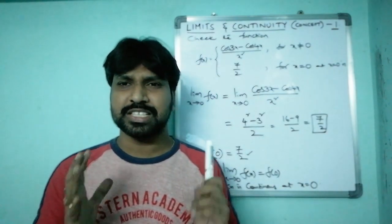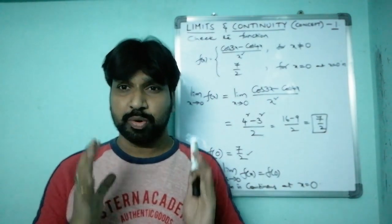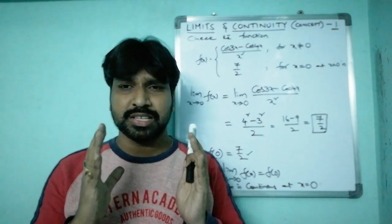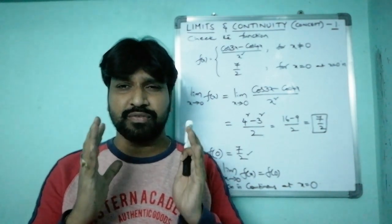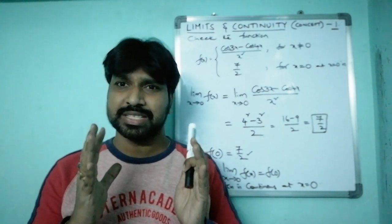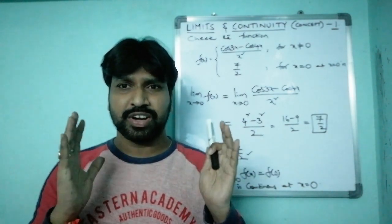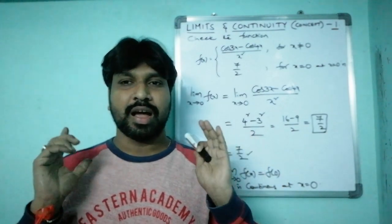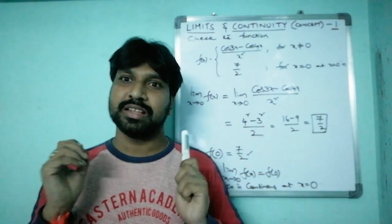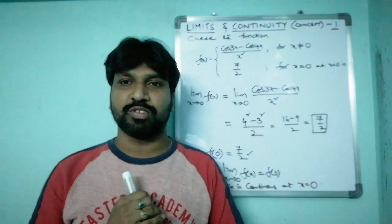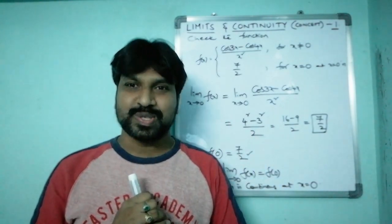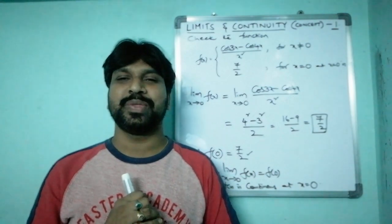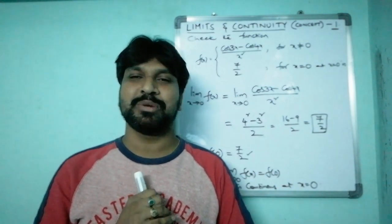So those are the two types: Type 1 and Type 2. In the next sessions, different examples and different shortcut formulas will be discussed for the continuity chapter. That's all for today's class. Thank you very much, bye.